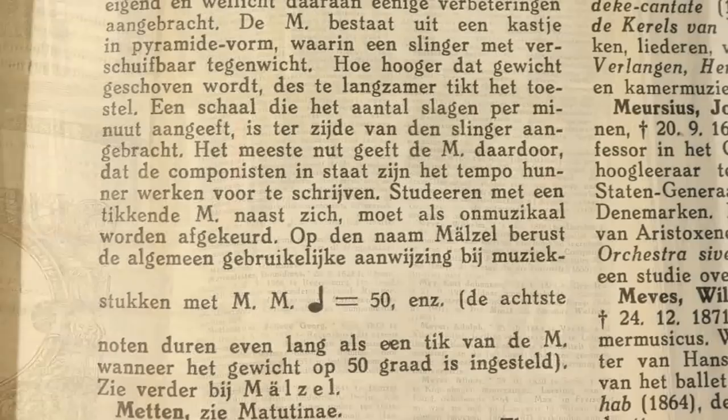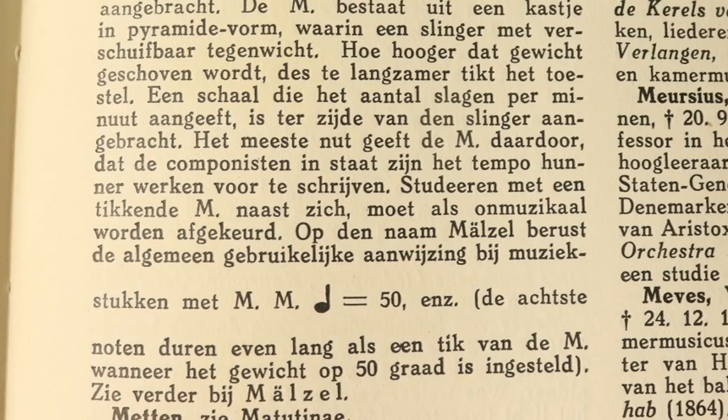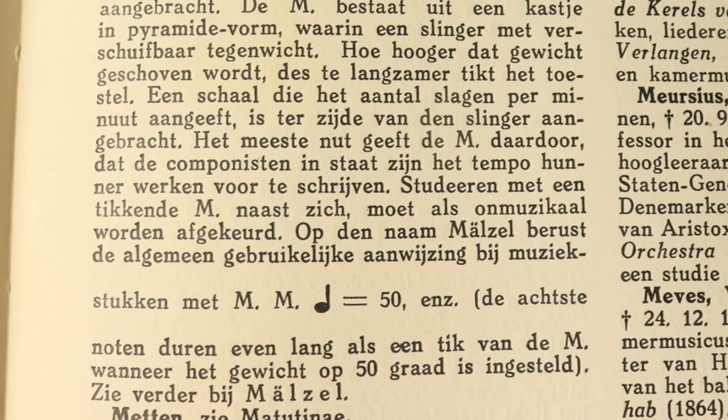So in Dutch, it sounds like this. Op de naam Melzel berust de algemeen gebruikelijke aanwijzing bij muziekstukken met mm, kwartnoot vijftig enzovoort, de achtste noten duren even lang als een tik van de metronoom wanneer het gewicht op vijftig raad is ingesteld.